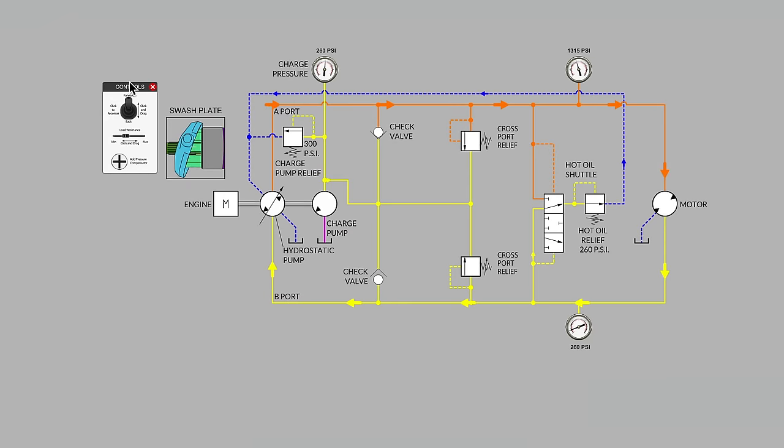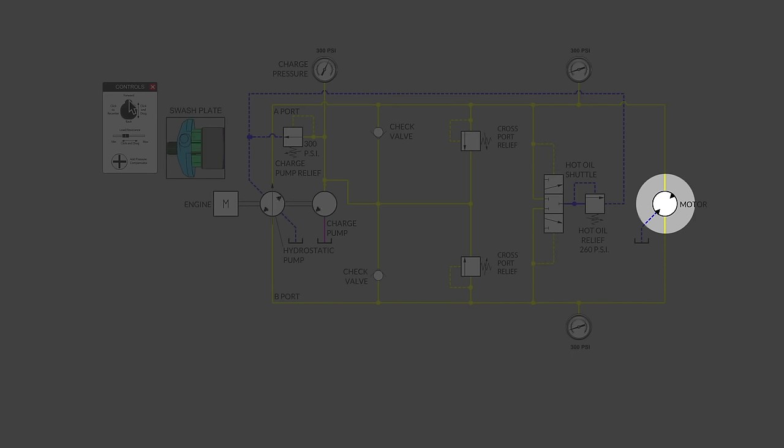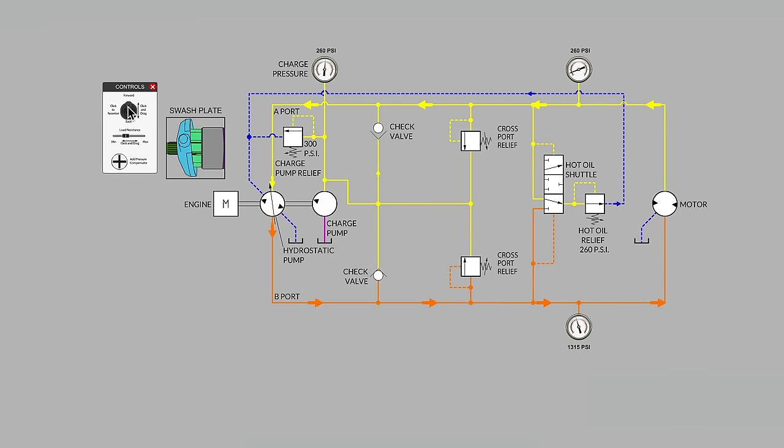And we looked at the concept of being able to return that swashplate all the way back to the neutral position to stop the rotation of the motor and pull that control lever over center to get a completely reversed flow around the loop to reverse the direction of the motor.